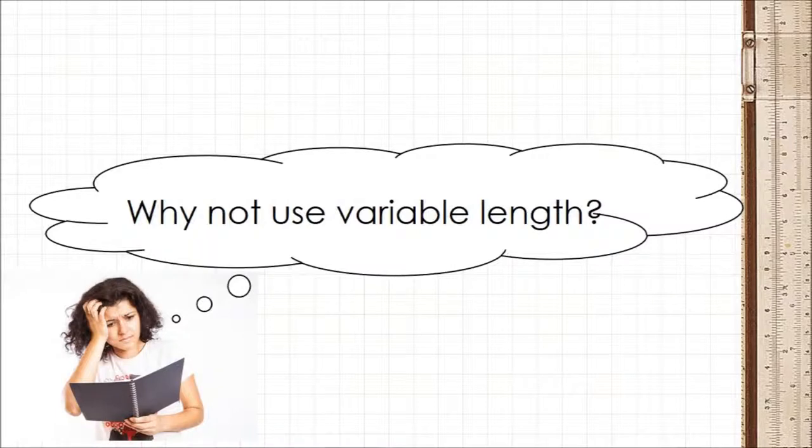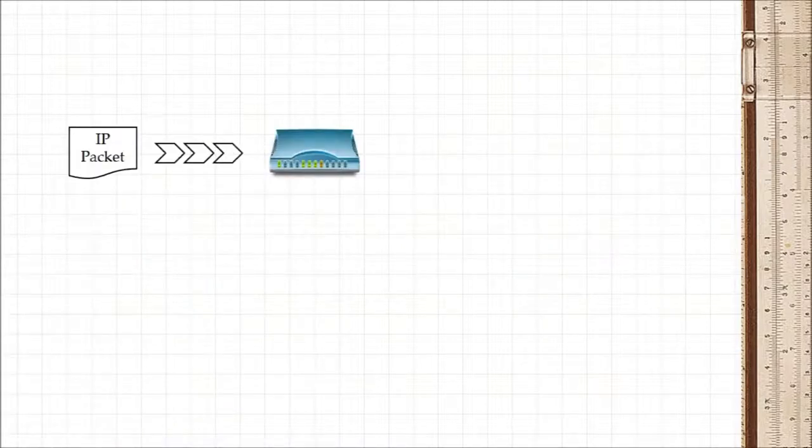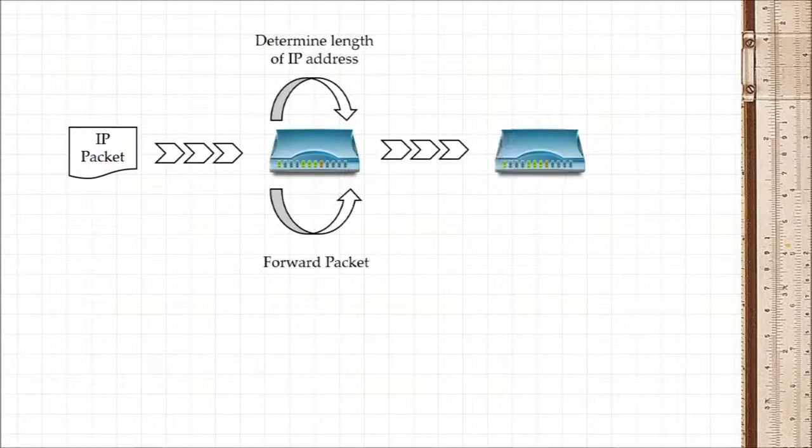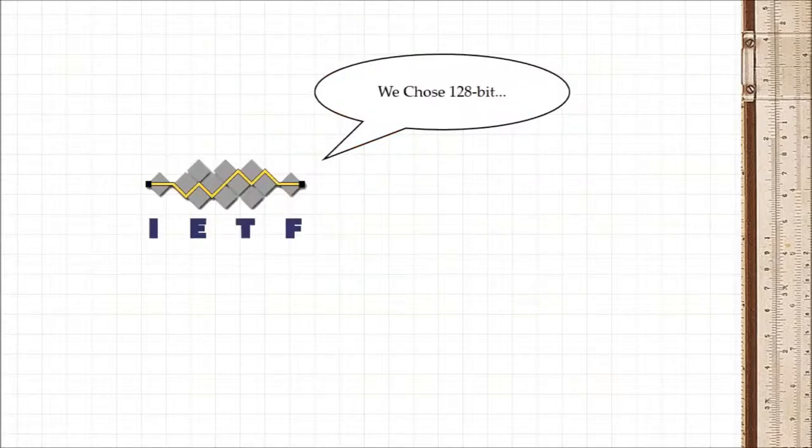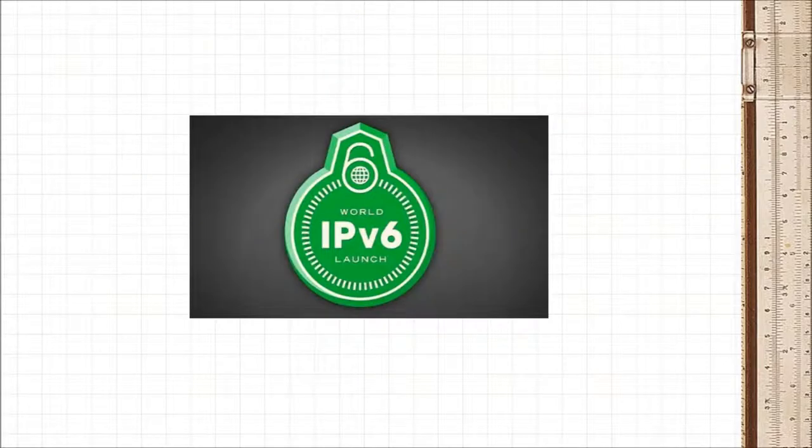Well, why didn't engineers just invent a variable length addressing space? Wouldn't that be easier? No. The Internet works on speed, and if routers had to spend even a fraction of a second unpacking a packet to find out the IP address, that would slow down the entire Internet. So a fixed length of 128 bits was chosen, and out of it was born IPv6.